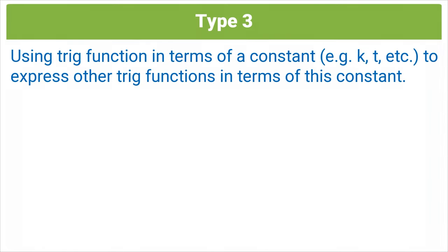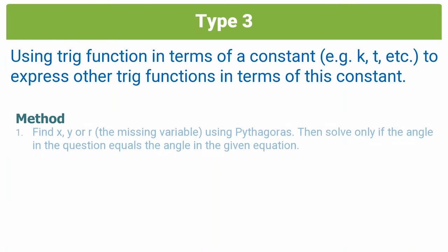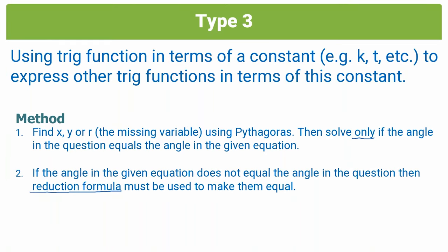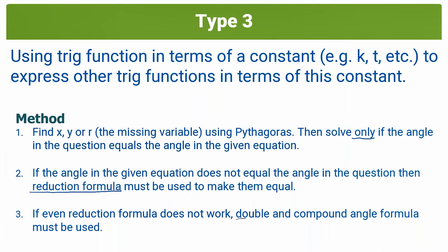What method are we going to use to approach a question like this? Step one would be to find x, y, and r, or the missing variable, using Pythagoras, and then solve the question — but only if the angle in the question equals the angle in the given equation. Step two: if the angles don't match, we use reduction formula to make them equal. And if that doesn't work, step three is to use double or compound angle formula.